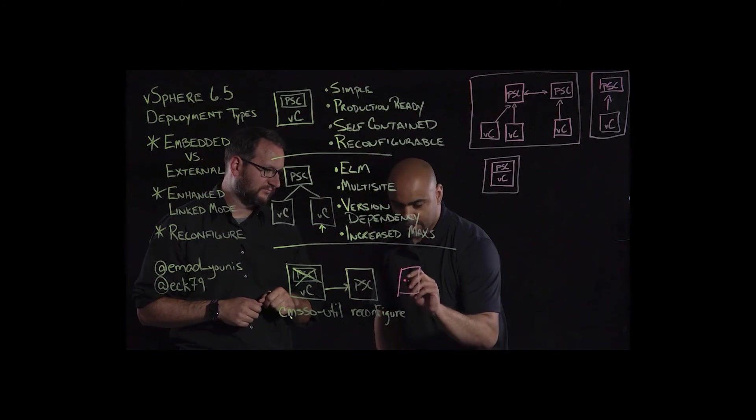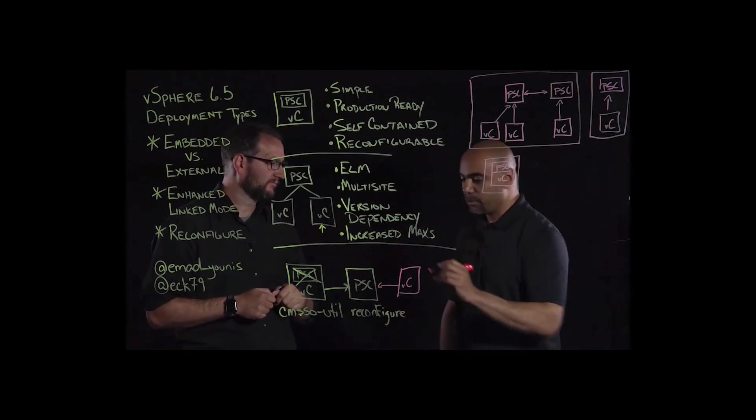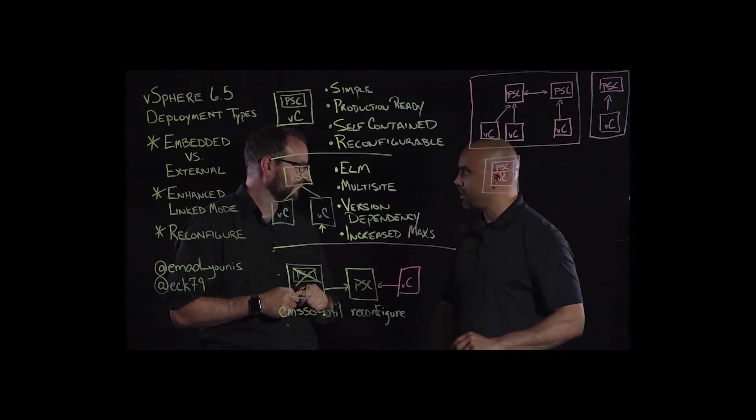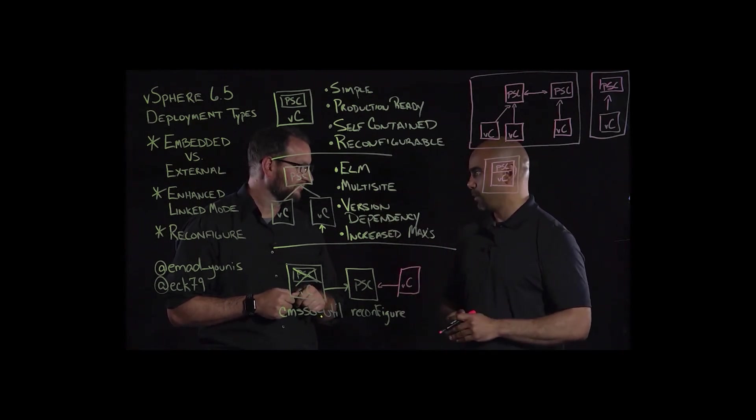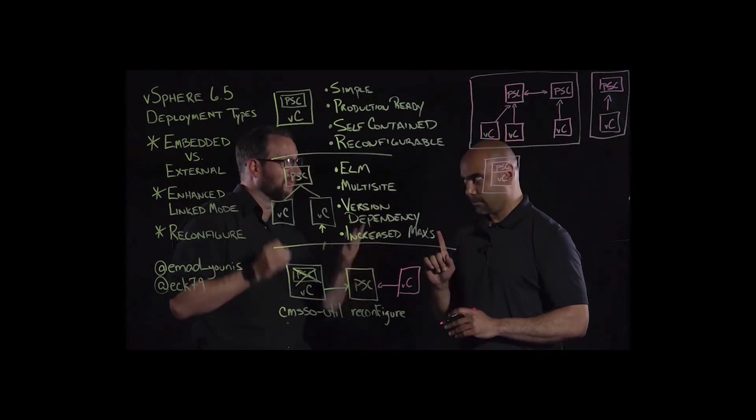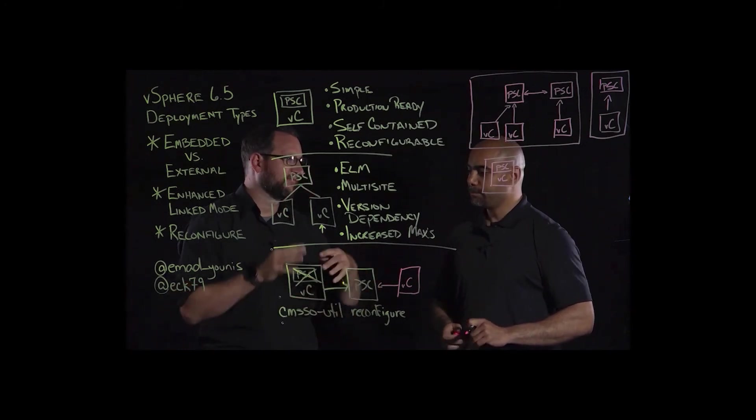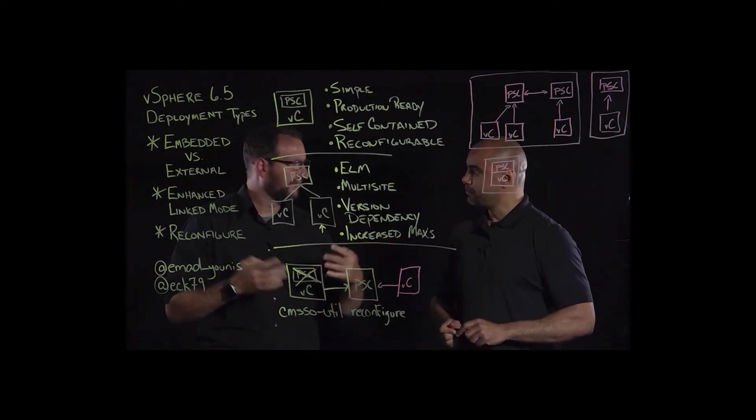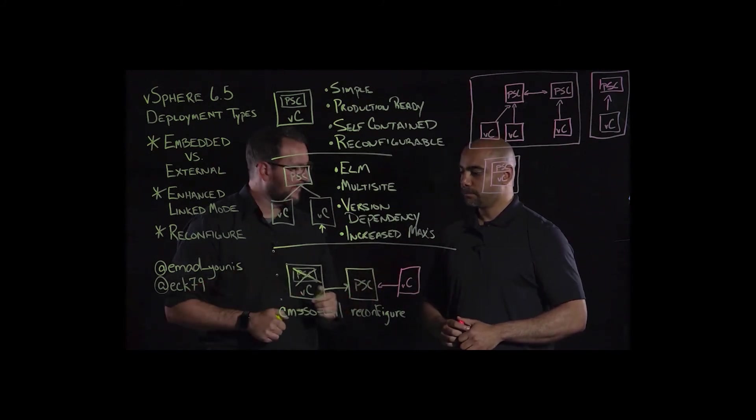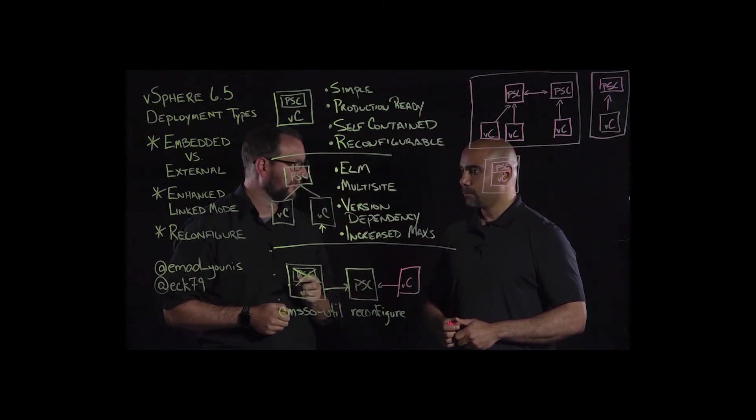So now that we've repointed or we've reconfigured, we've decommissioned that embedded PSC through this cmsso-util reconfigure command, now we've got our external deployment. But I thought the whole point of this is to prepare for enhanced linked mode. So then what would be next? So now, I've deployed a secondary vCenter server. I can now point it to this external PSC, and voila, we have enhanced linked mode. That sounds great. And now kind of the sky's the limit. Well, the configuration maximums guide is the limit.